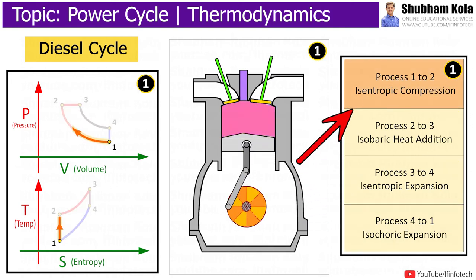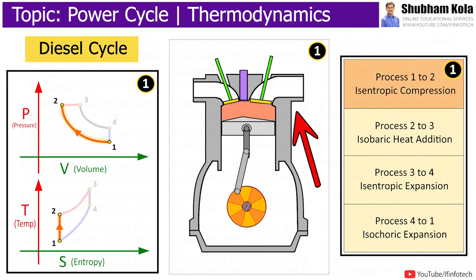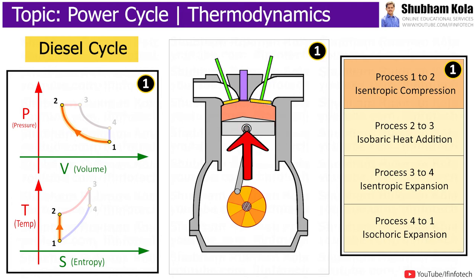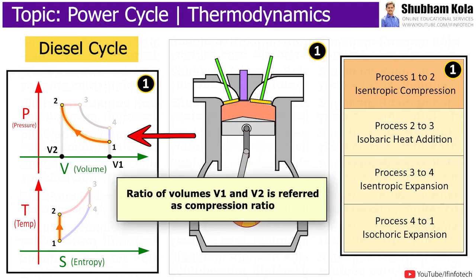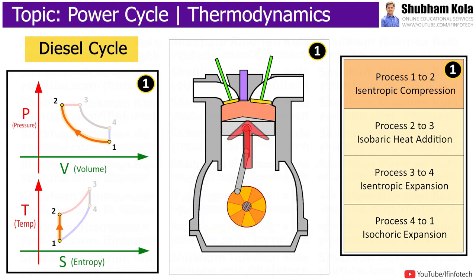Process 1 to 2 is isentropic compression, which is an adiabatic process as there is no heat transfer to or from the system and it is a reversible process. The gas inside the cylinder is compressed from volume V1 to V2. The ratio of volumes V1 and V2 is referred to as the compression ratio. Here, work is done by the piston on the gases, which means external work has to be done to compress the gases.